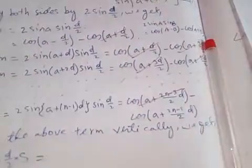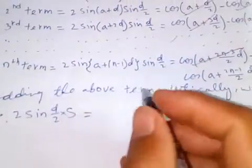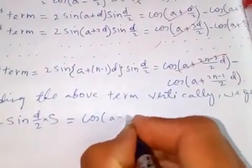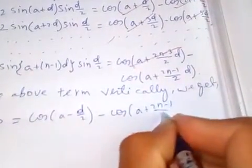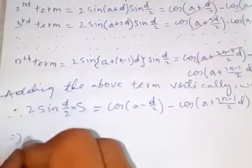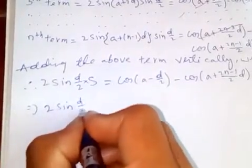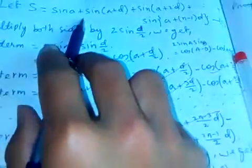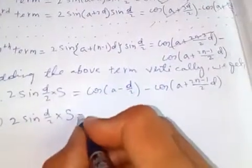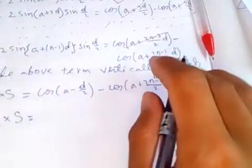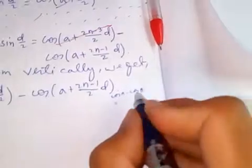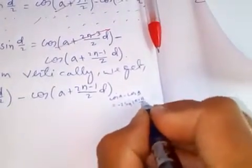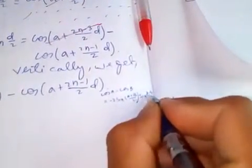After cancellation, we are left only with: cos(A minus D over 2) minus cos(A plus (2n minus 1) over 2 times D). Now let's simplify this. We can apply the formula: cos(A) minus cos(B) equals minus 2 sin((A plus B) over 2) sin((A minus B) over 2).